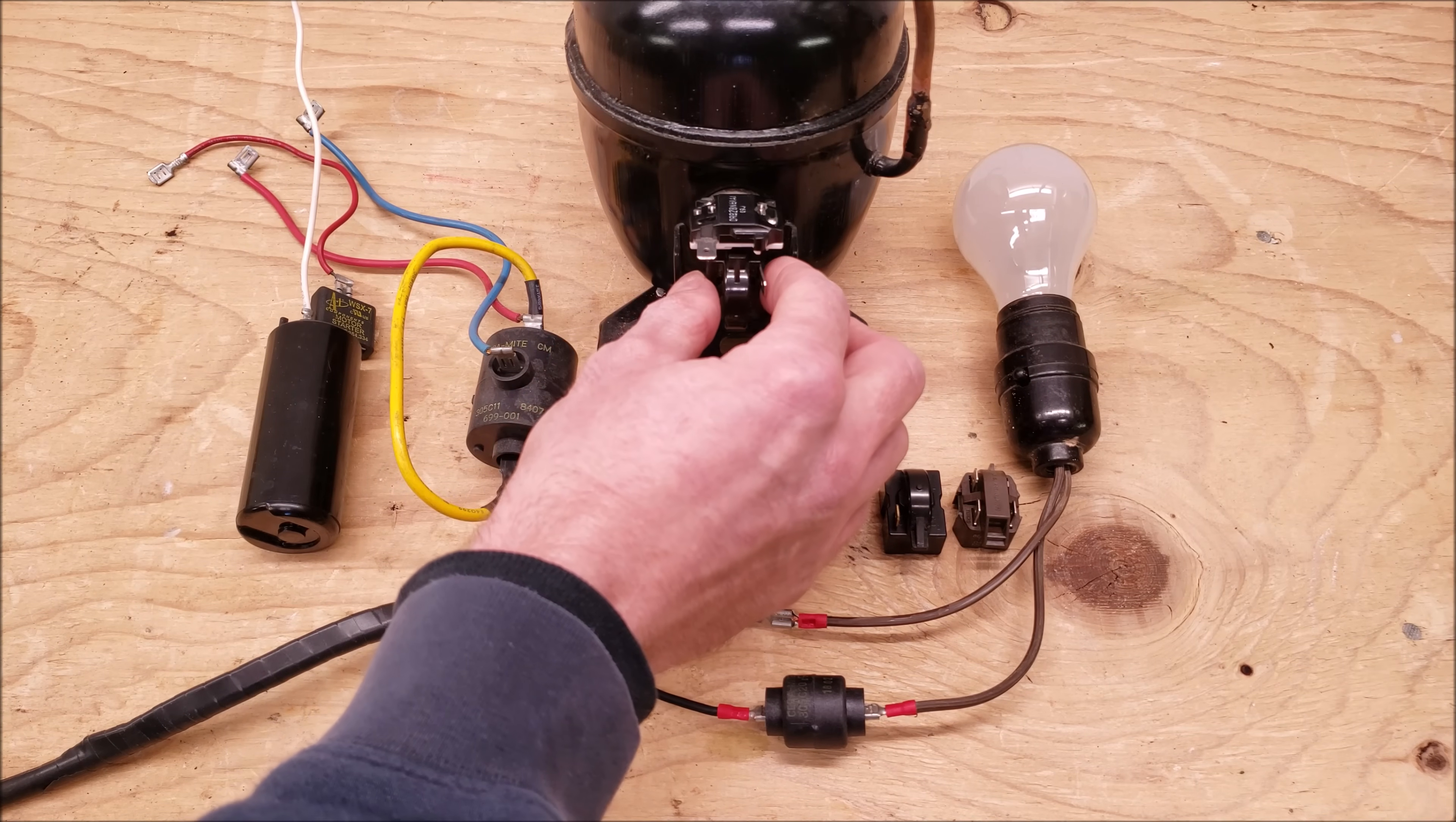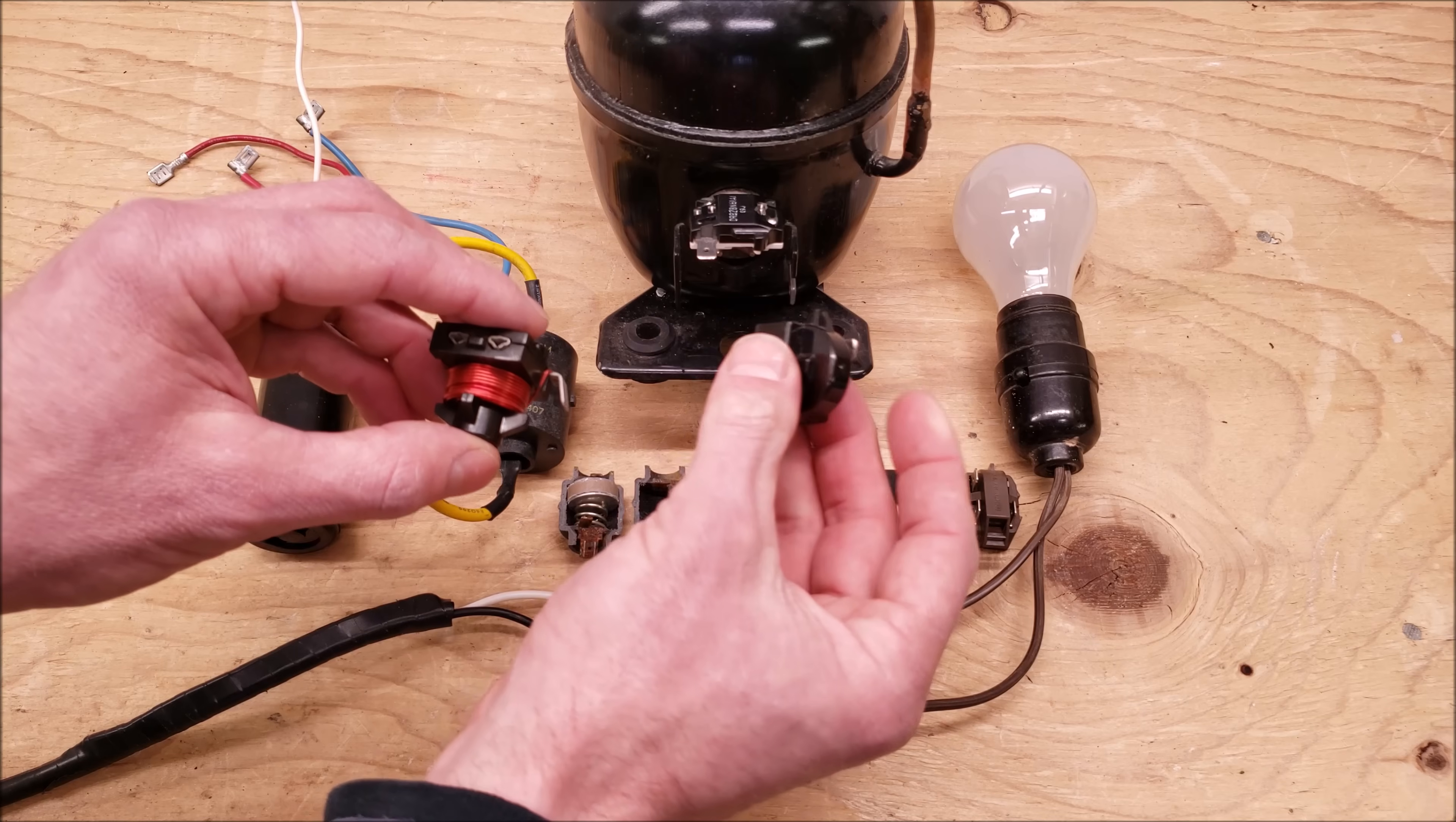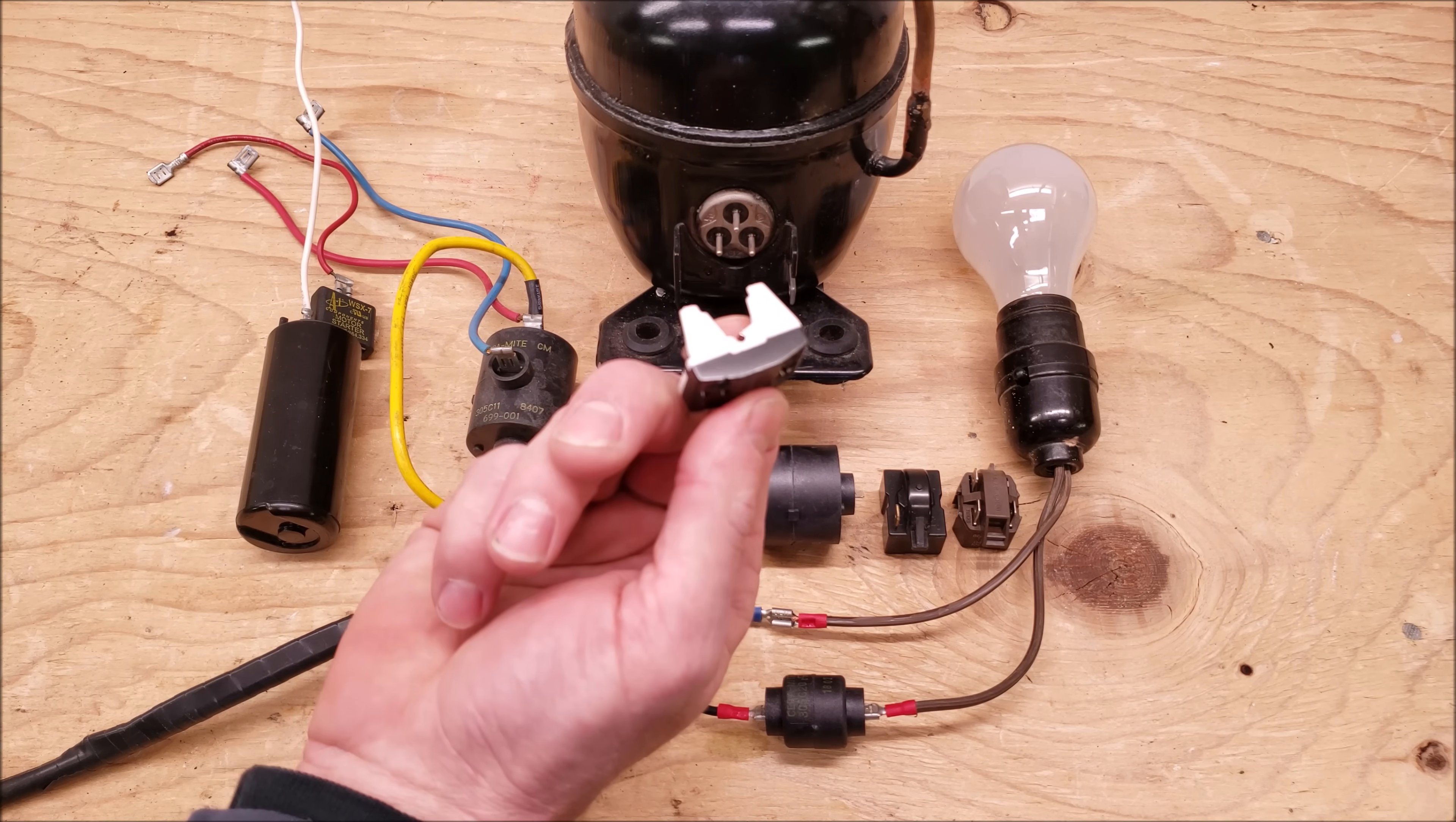So the PTC thermistor right here is getting connected directly to the start and the run terminals. And you don't want to get that confused with this right here. This is a current starting relay and you can tell the difference between a PTC thermistor and a current starting relay due to the wire coil on the outside. And this right here, this is just a compressor protector and it has a little thermo disk inside. So this is attached to the common terminal.